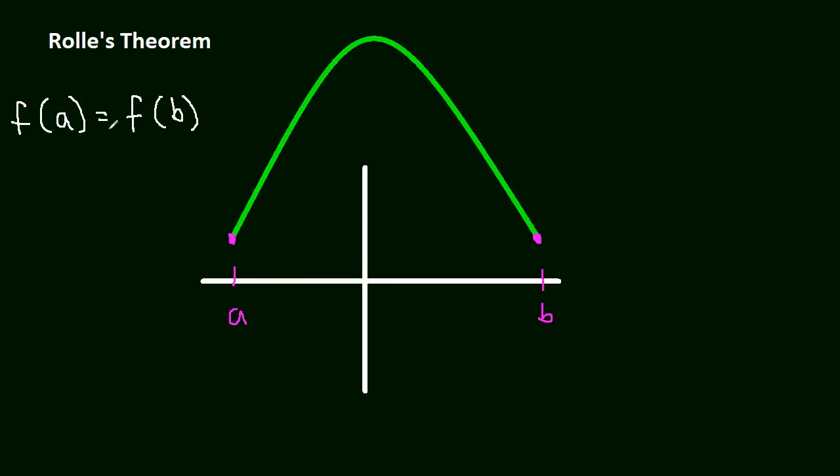Now assuming that this function is continuous and differentiable, meaning that there's not going to be a sharp turn or anything like that. So if this function is continuous and differentiable, and you have these two heights that are equal, then you can be sure that there's some critical number, F prime of C, that equals 0. So you can be sure that there's a critical number there where you take the derivative at a certain point and the slope is 0.